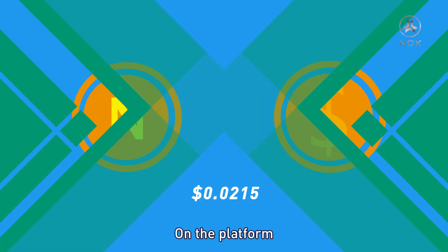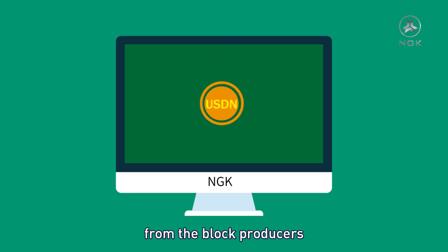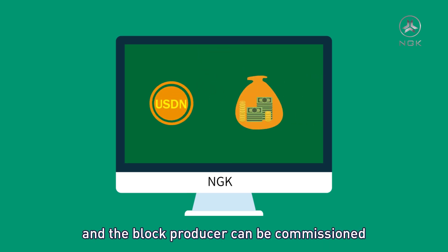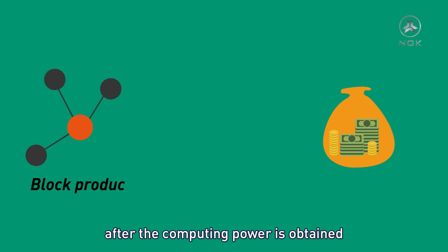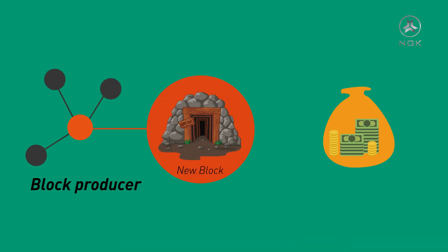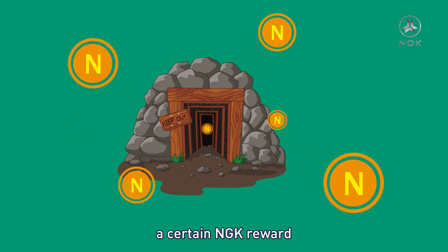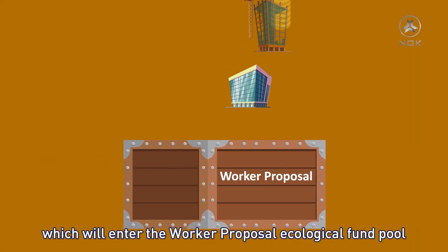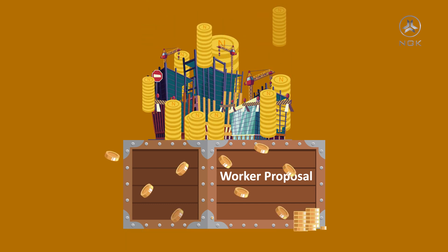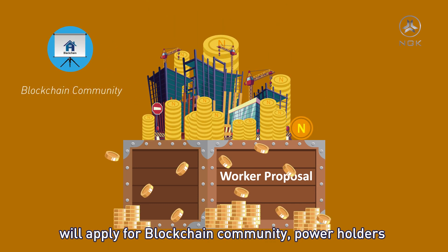On the platform, USDN can be used to purchase computing power from the block producers, and the block producer can be commissioned to calculate new blocks after computing power is obtained. The produced blocks correspond to a certain NGK reward, which will enter the worker proposal ecological fund pool. Meanwhile, the worker proposal will apply for the blockchain community and power holders.